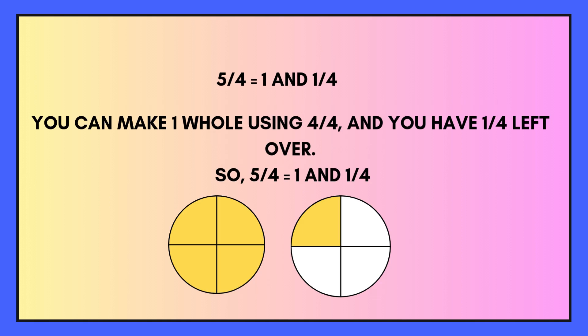5 quarters. How many 4s can we get into 5? Well, we can get 1 four into 5, but we are still left with 1 left over. So the answer is 1 whole and 1 quarter — 1 and a quarter.